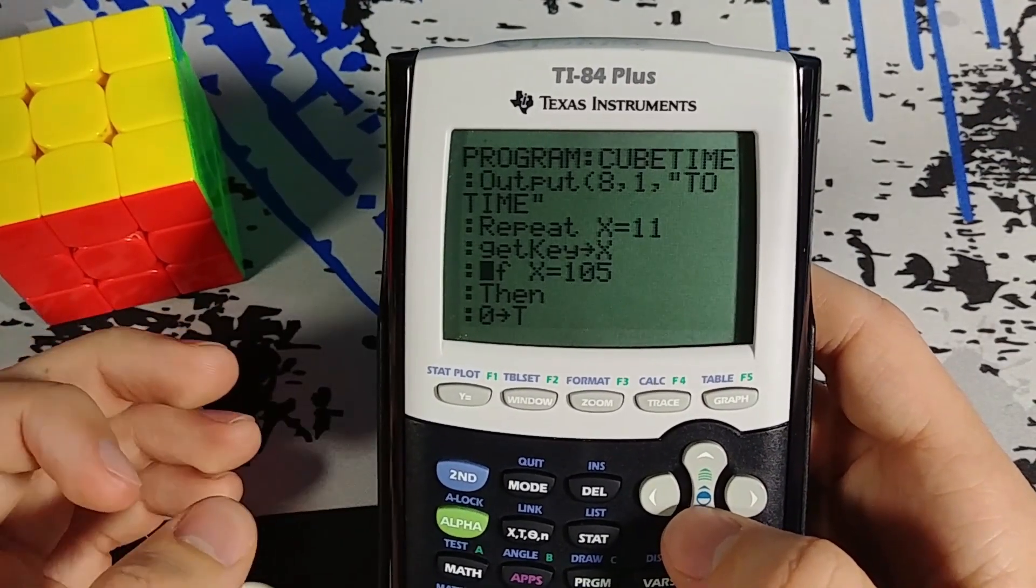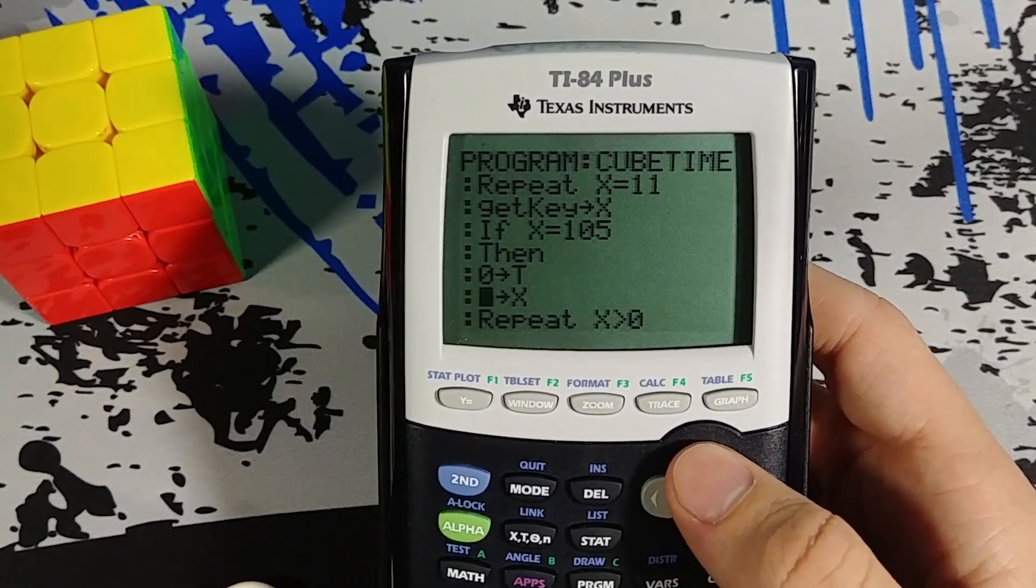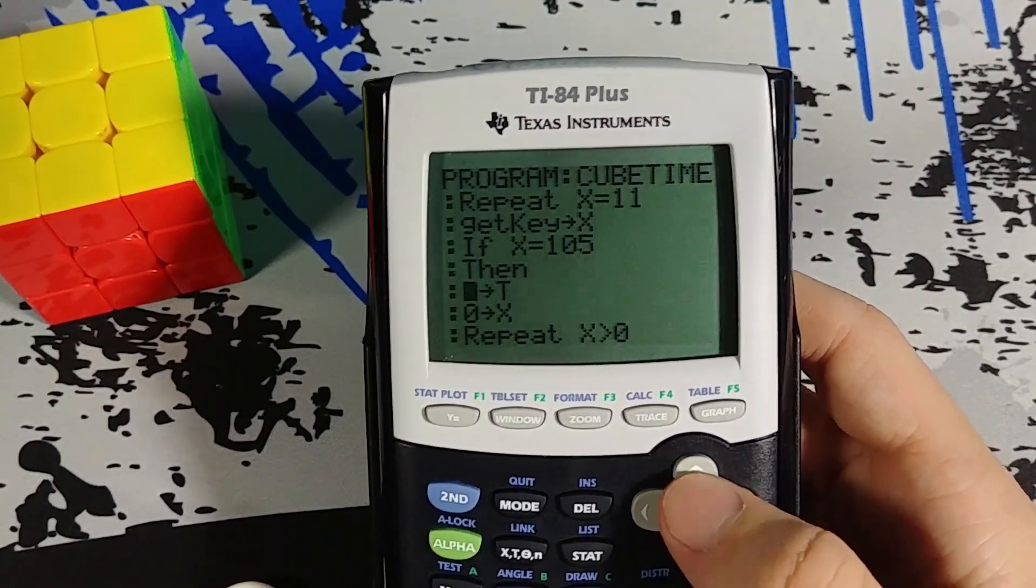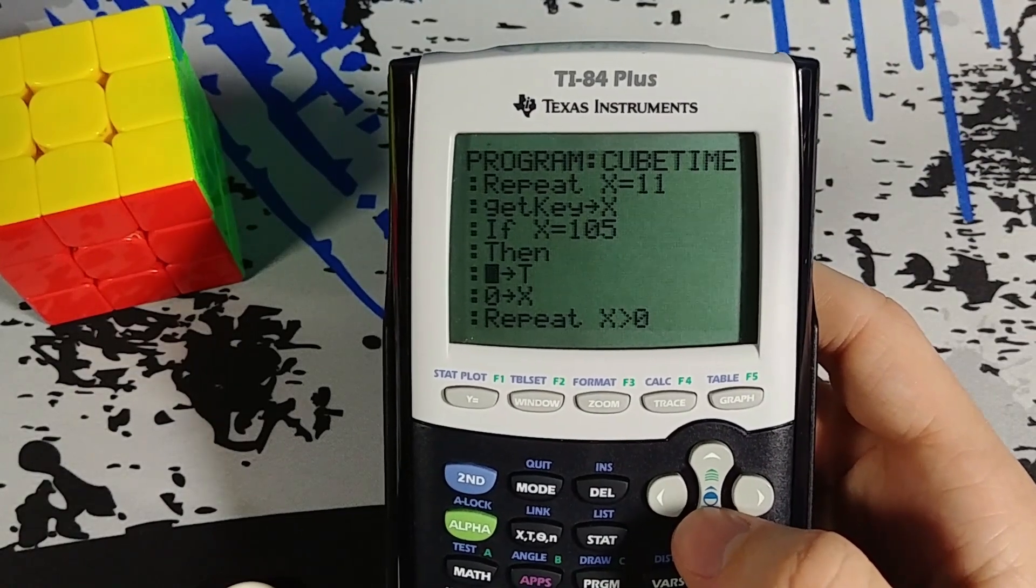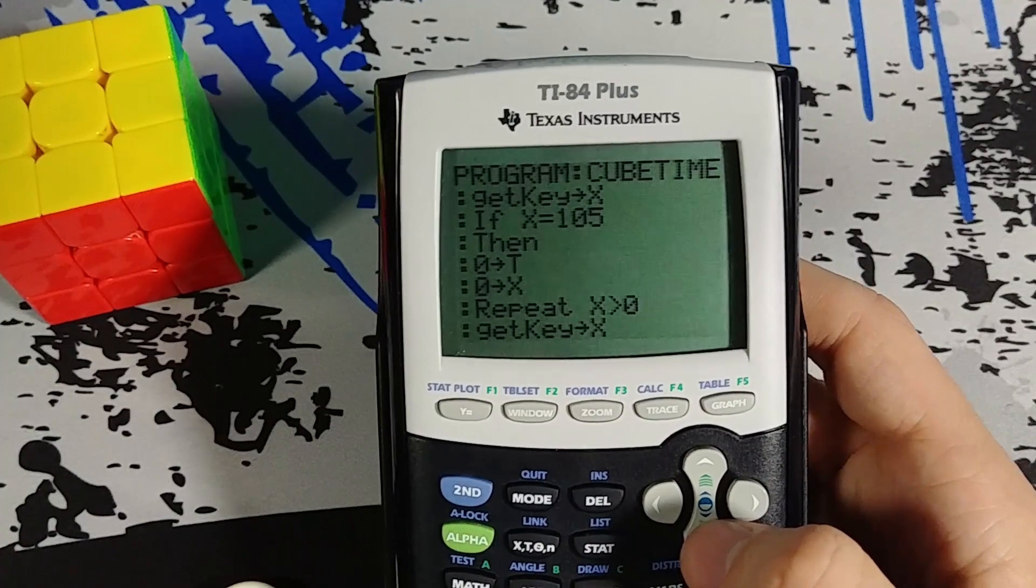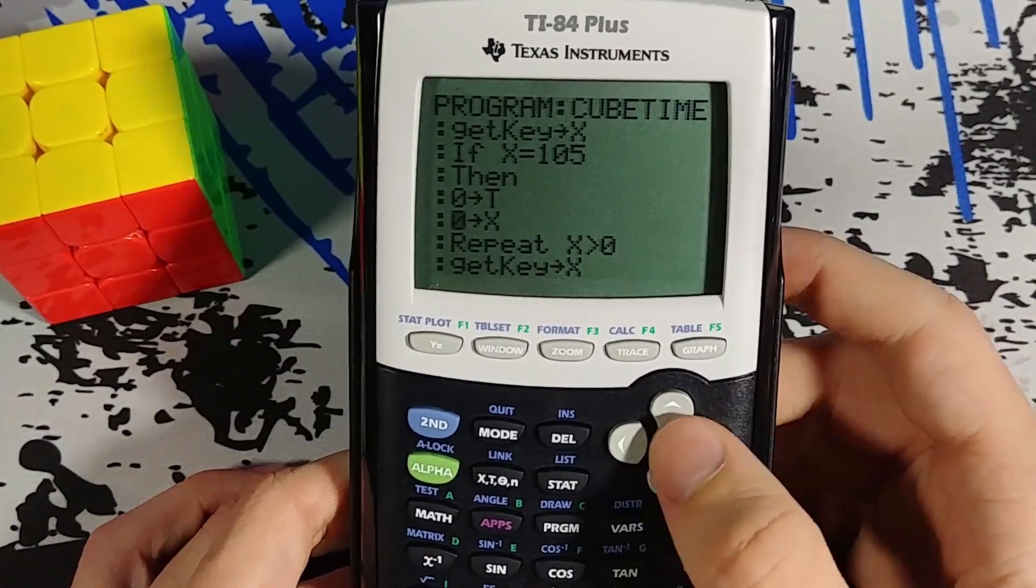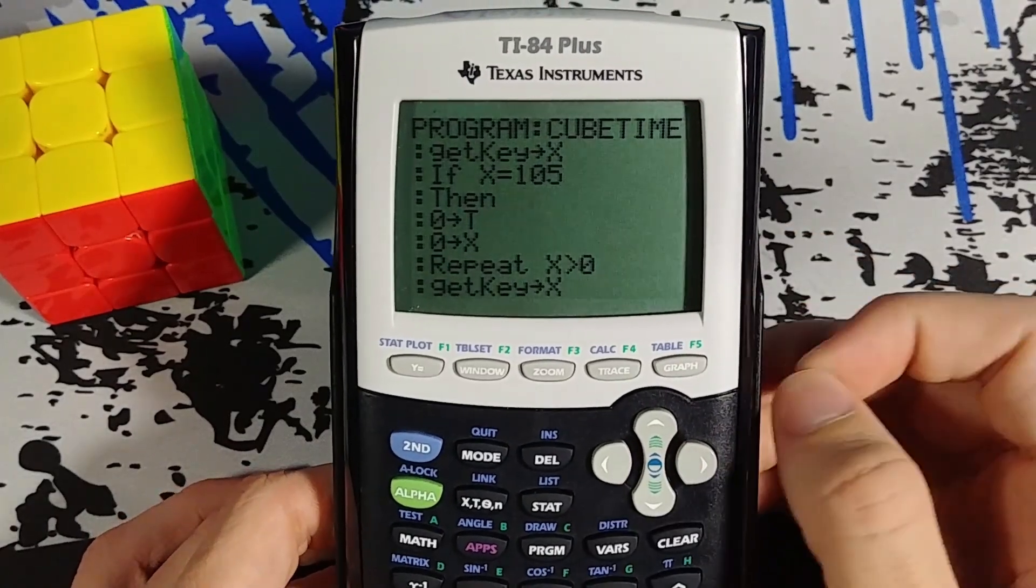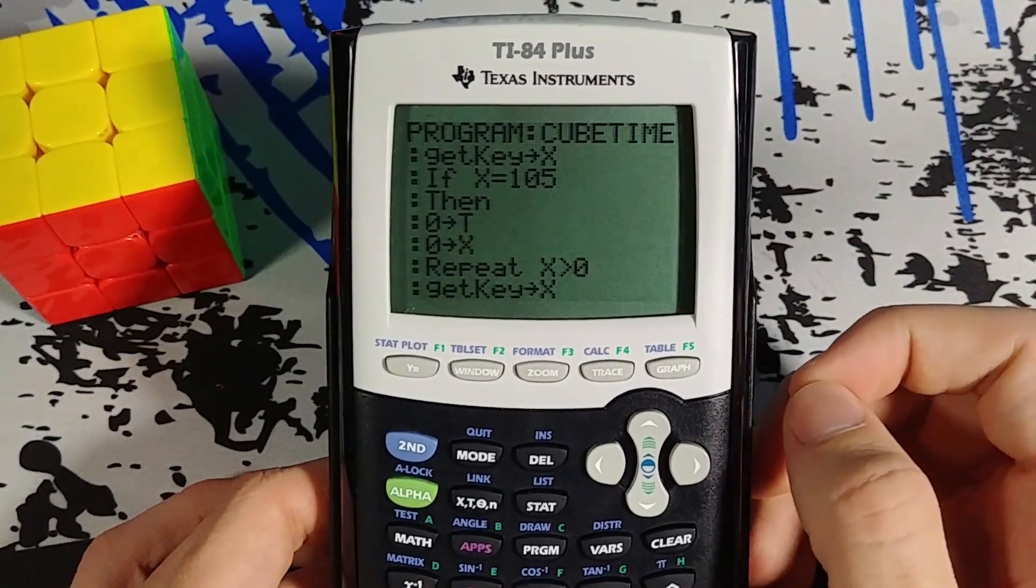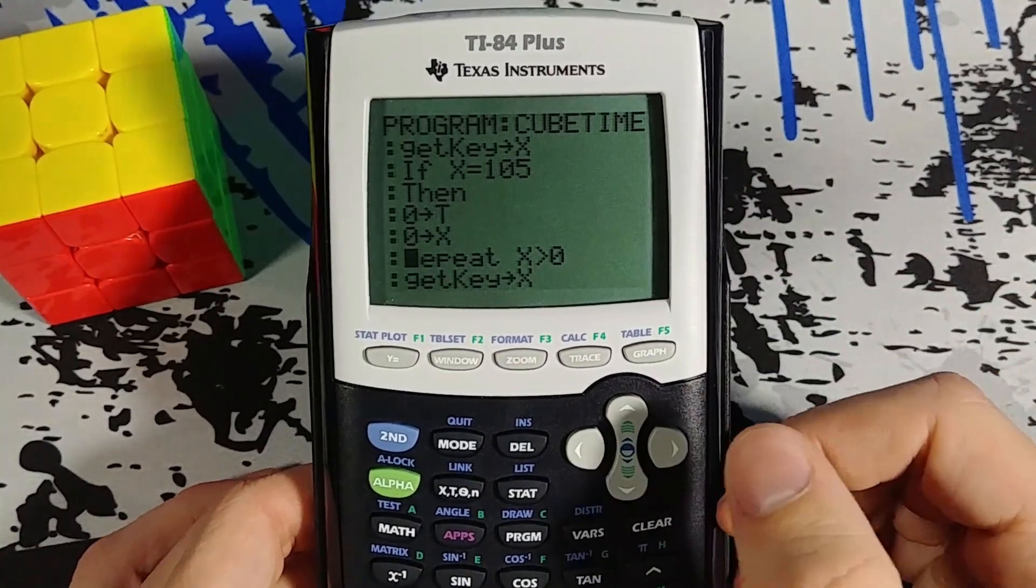And then I'm asking if x equals 105, which is the enter key. Then what we're going to do is put zero into t. So t is our time, whatever time you got on that solve. And then I put zero into x. Because I want it to be zero. Because zero isn't actually a key. And now I'm starting a new repeating function where if x is greater than zero, aka if x is any key, then it's going to stop my timer.